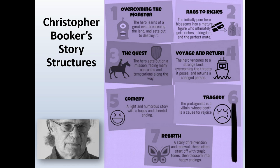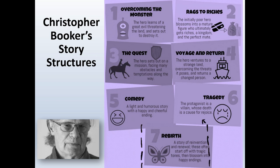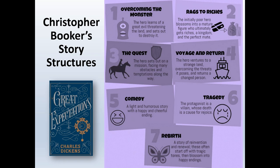The sixth plot structure is tragedy, which consists of a protagonist who may be a villain whose death is a cause for rejoice or catharsis. If you're interested in tragedy, you might want to explore Aristotle's ideas — he has his own particular model for tragic heroes. The seventh structure is rebirth: a story of reinvention and renewal that often begins with some element of tragedy or sadness, the protagonist experiences personal growth, and it ends with a happy ending.